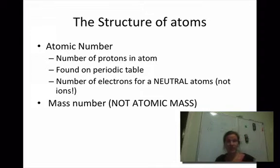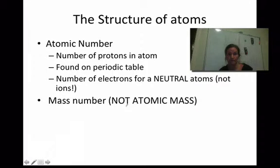The mass number is another number we look at with atoms, and let me tell you up front, it's not the atomic mass. Atomic mass, that is something that you get from the periodic table. Mass number, you cannot get from the periodic table.